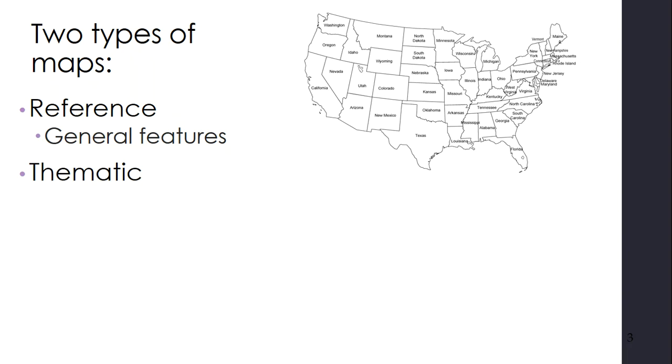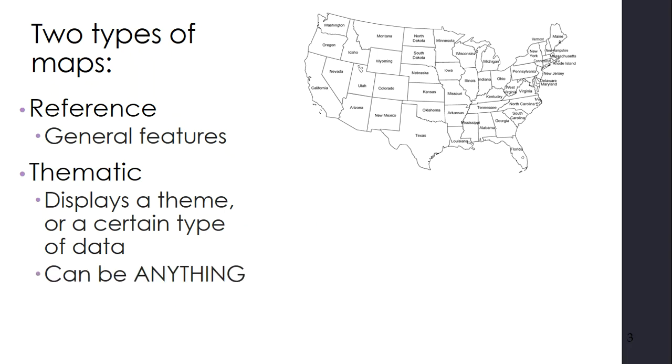The other type of map are thematic maps. Thematic maps display a theme or a certain type of data. Geographers love thematic maps. They allow us to play with data and show all types of phenomenon through geographic maps. They can literally be anything, and we'll look at some examples of those. Your assignment for Chapter 2 will be about thematic maps partially. So think about that while we're looking at this part of the lecture.